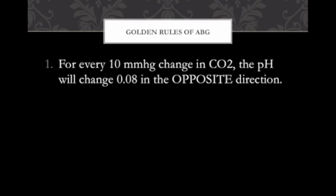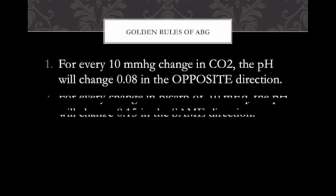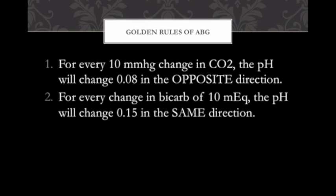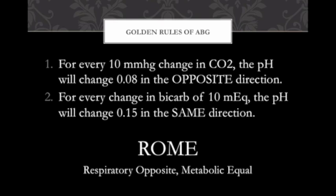Now the golden rules of ABG. Golden rule number one: for every 10 mmHg change in CO2, the pH will change 0.08 in the opposite direction. What's important is that they go in opposite directions. Golden rule number two: for every 10 mEq change in bicarb, the pH will change 0.05 in the same direction. Remember the mnemonic ROME — Respiratory Opposite, Metabolic Equal. CO2 goes up, pH goes down; pH goes up, bicarb goes up.